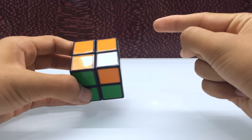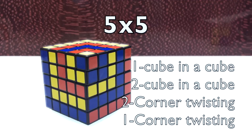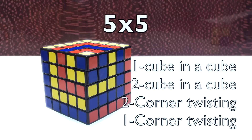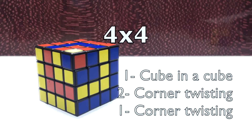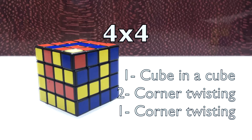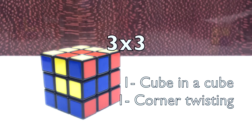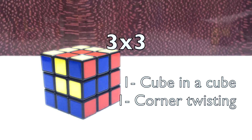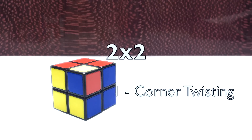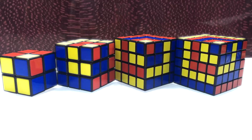This is how you do the cube in a cube pattern. On the 5x5 it was: one layer cube in a cube, two layer cube in a cube, two layer corner twisting, one layer corner twisting — so one, two, two, one. On the 4x4 it was: one layer cube in a cube, two layer corner twisting, one layer corner twisting — so one, two, one. On the 3x3 it was: one layer cube in a cube and one layer corner twisting — one and one. On the 2x2 it's only the corner twisting algorithm.